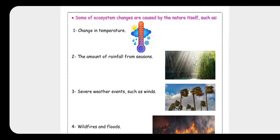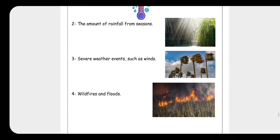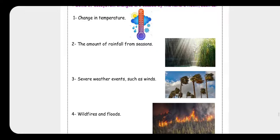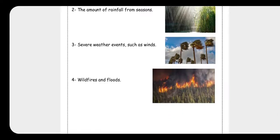Number three: severe weather events — severe means very difficult conditions, like strong winds. Number four: wildfires and floods. When the amount of rainfall increases too much, floods will happen. And when the temperature is very high, wildfires will happen.